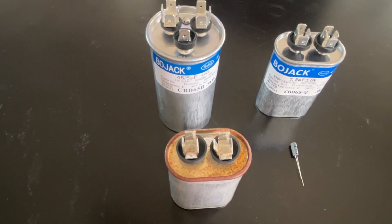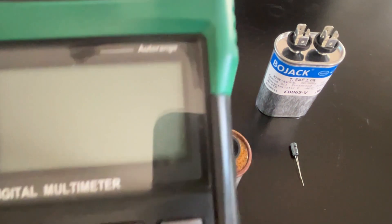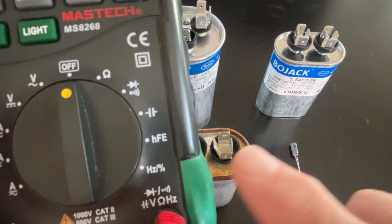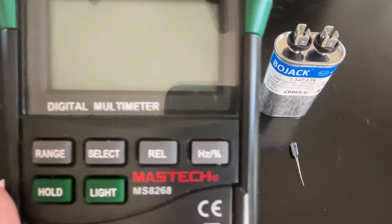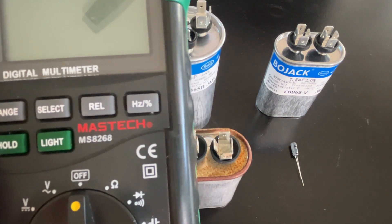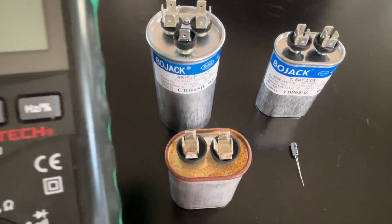Hi, today I want to show you how to test capacitors. To do that, you need a multimeter that has a capacitance setting. Right here is the capacitance setting, and this is the Mastech 8268, but there are many multimeters that can do this.